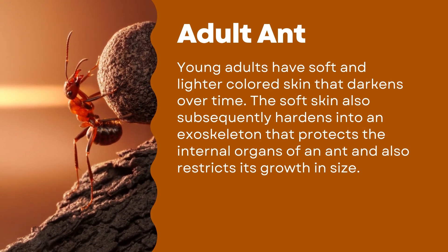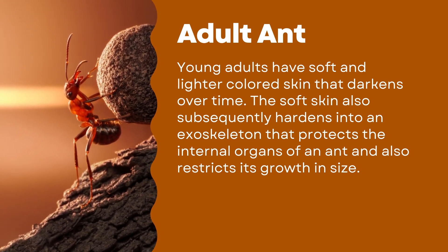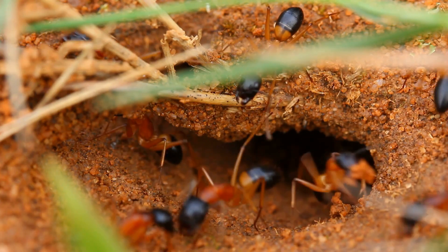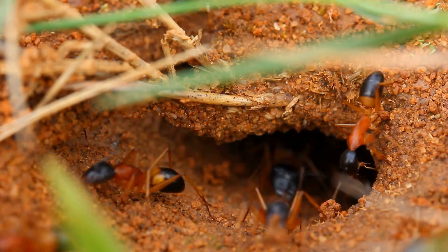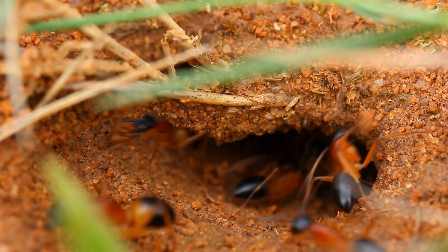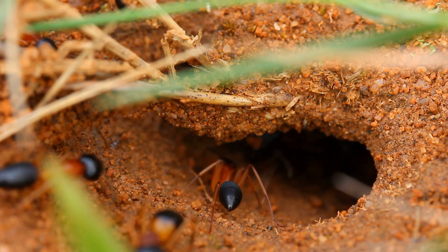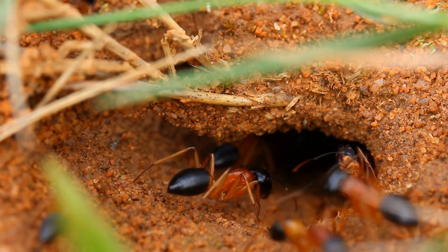Adult ants are classified into three main castes: the queen, worker, and male. Queens are females and are larger than members of the other castes. They initially have long wings that fall off at some stage, and they lay all the eggs in a colony. Workers are smaller females who do not lay eggs and perform all the day-to-day work that ensures the smooth running of the colony. Males have wings at the start, can fly, and mate with the queen.